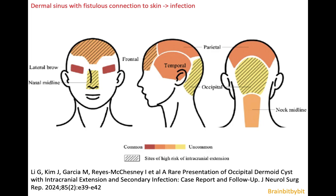Dermoid cysts can have a fistulous connection to the skin, and this fistulous connection to the skin is called a dermal sinus. That's something important to be aware of, because if there's a connection between the skin and the subcutaneous tissue with the intracranial compartment, the patients are more prone to infection.